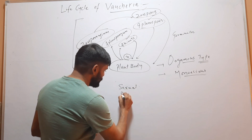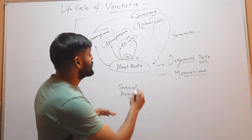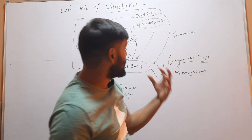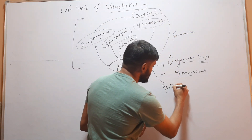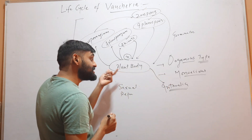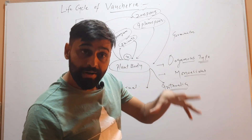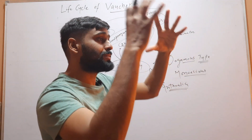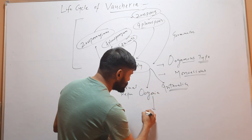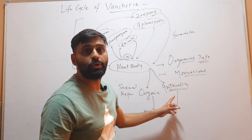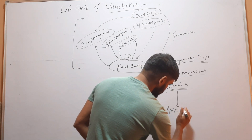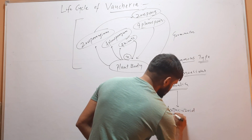In sexual reproduction, a small outgrowth occurs on the plant body; it increases in size, bends like a horn, and ultimately forms the antheridium — the male reproductive structure. If it is monoecious, the same plant body also forms a small outgrowth through the cytoplasm, which increases in size and becomes rounded. That rounded structure is called the oogonium, and this oogonium will produce the egg.